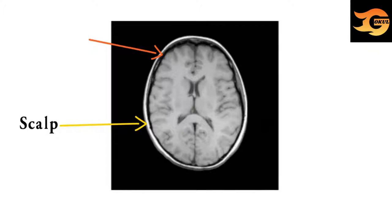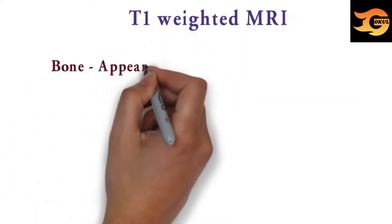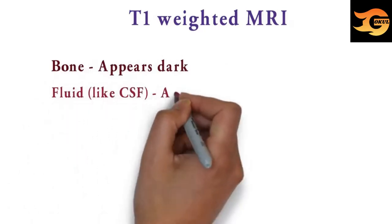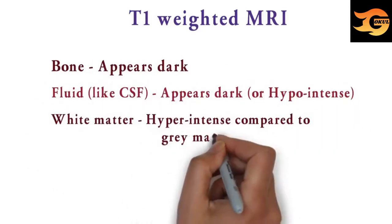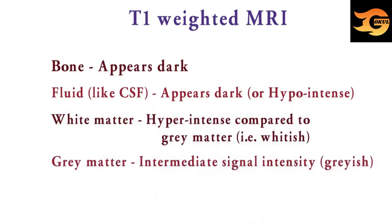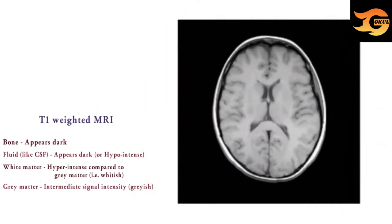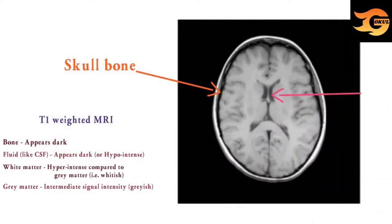I would like to tell you about a few important sequences of MRI. First, T1 weighted MRI. In T1 weighted MRI, bone appears dark, fluid like cerebrospinal fluid appears dark, white matter appears whitish compared to grey matter (i.e. hyperintense), and grey matter appears grayish. This is T1 weighted MRI in which skull bone and CSF both appear dark and white matter is appearing white.